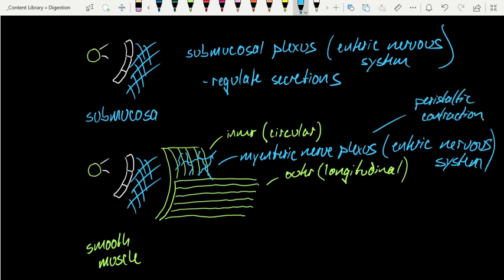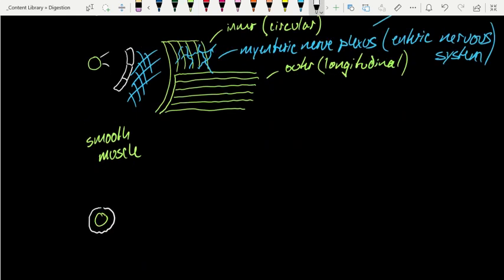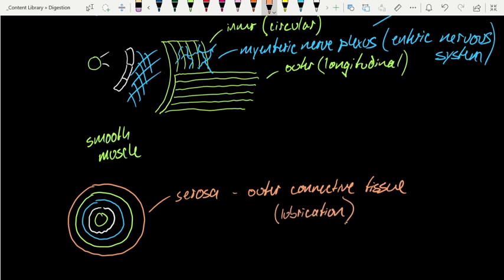Peristalsis is the sequential movement that squeezes a tube from one point to another to initiate unidirectional movement of the substance within. Summing up all these layers: starting with the gut tube in the middle, the mucosal layer, the submucosal connective tissue with the submucosal plexus, followed by a layer of smooth muscle, and finally what we call the serosa — the outer connective tissue serving the general role of lubrication so that these structures are free to move within the body. Now we have a general sense of how the gut tube is built and what layers to expect.